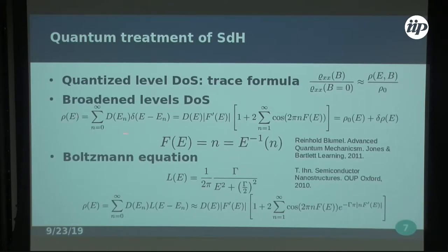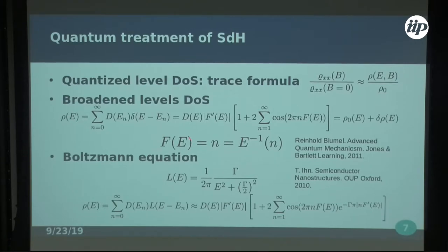We start with the density of states. We know we have Landau levels, so we have delta functions. We use a Poisson summation formula to expand it in a nice way. Here we have the inverse function of the energy, which gives the Landau level number N at some energy — for example EF. That's basically all we need if we accept that the main mechanism behind SdH oscillations is which Landau level we're in. We then add an ad-hoc broadening to this F-function to account for scatterings, which gives the Dingle factor — the one that explains the damping at low magnetic fields.